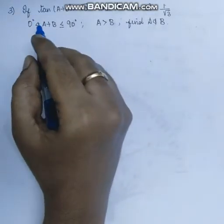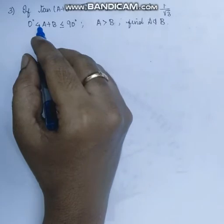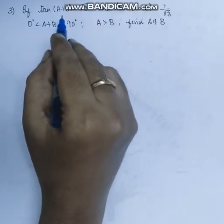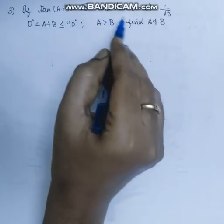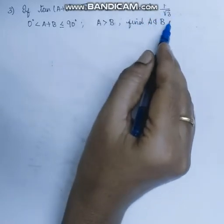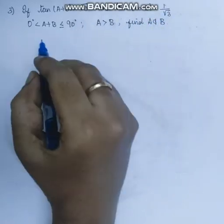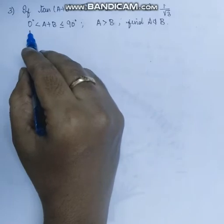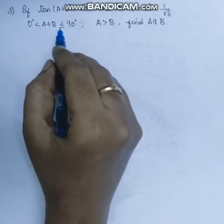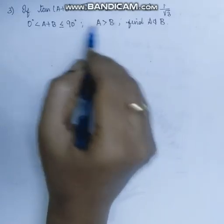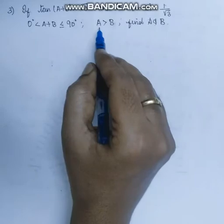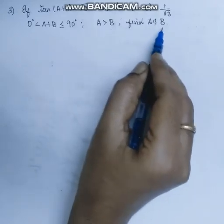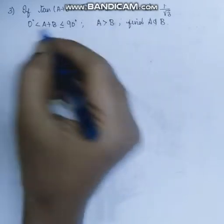Good morning. Next problem, exercise 8.2 last third sum. If tan(a+b) is equal to root 3 and tan(a-b) is equal to 1 by root 3, and a plus b lies between 0 and 90 degree, less than or equal to 90 degree, and a is greater than b — find a and b. So, solution: